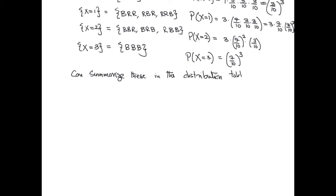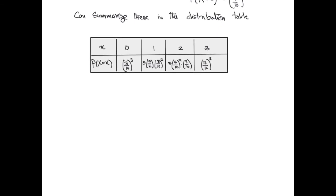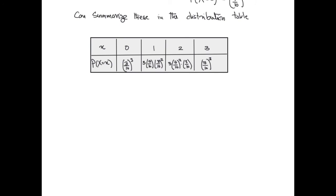Where the first row of the distribution table is going to correspond to the values of x and the second row corresponds to the probability that x takes the given value.